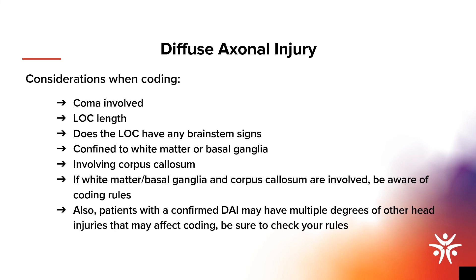When coding a DAI, the following should be considered: Was there a coma involved? A coma is defined as the absence of eye-opening to painful stimuli, no following of commands, and no spoken words or utterances. Did a loss of consciousness occur, and if so, how long? Associated with loss of consciousness, were there any brain stem signs? Where was it confined to — white matter or basal ganglia? Did it involve the corpus callosum? Be aware of coding rules if white matter, basal ganglia, and the corpus callosum are all involved. Also, patients with a confirmed DAI may have multiple degrees of other head injuries that may affect coding, so be sure to check your rules.